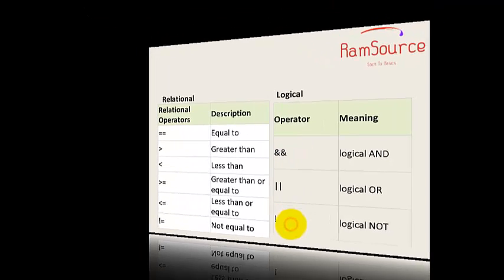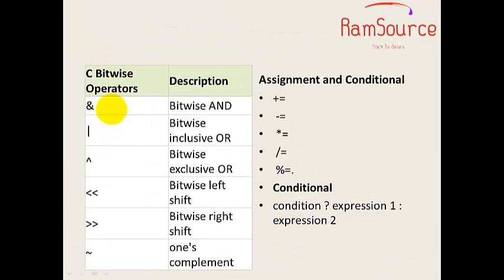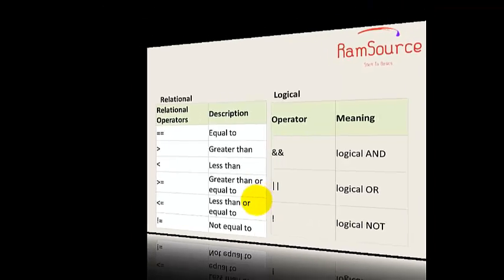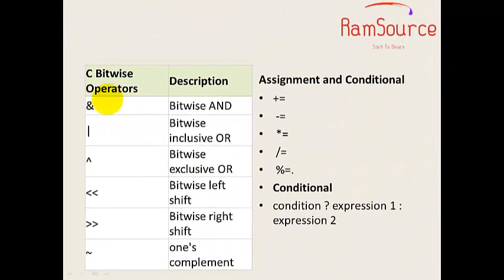Logical operators are AND, OR, and NOT. Here are the bitwise operators. Logical operators work on a full byte — AND, OR, NOT operate on the full byte. Whereas bitwise operators perform the operation bit by bit on the full expression, that is, a whole byte. The main difference: bitwise has AND, OR, exclusive OR, bitwise shift left, right shift, and ones complement.